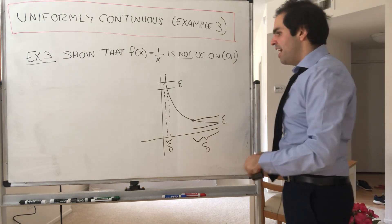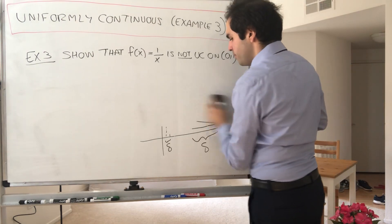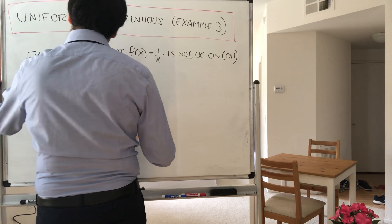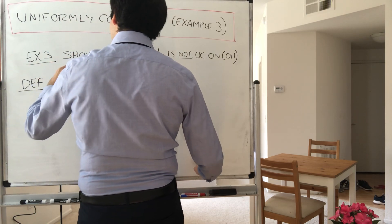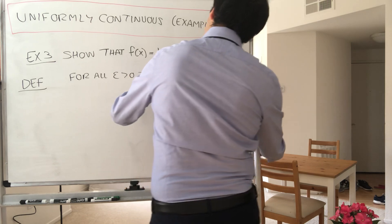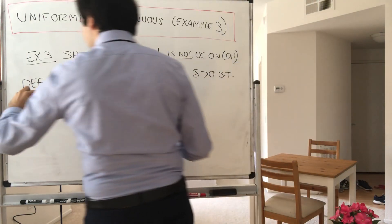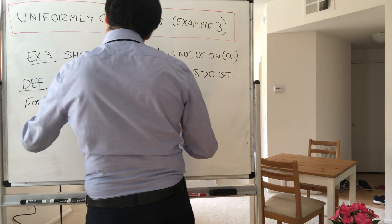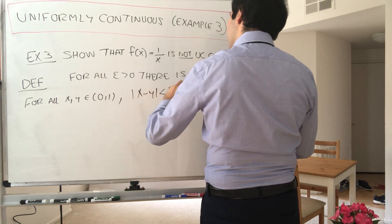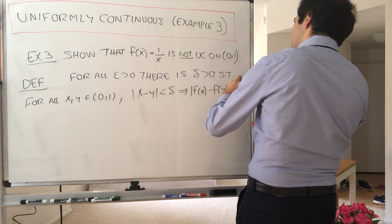We have to prove this, so let me remind you of the definition of uniform continuity. Definition: f is uniformly continuous if, for all epsilon greater than 0, there is delta such that for all x and y in (0,1), if |x minus y| is less than delta, then |f(x) minus f(y)| is less than epsilon.